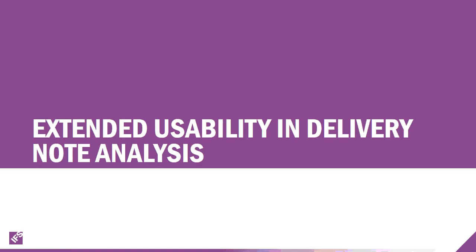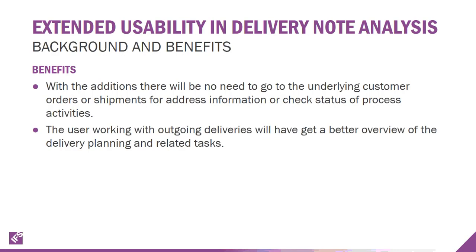We've done some improvements in the delivery node analysis based on business requirements from customer feedback. The requirement was to have an operations center where the user can plan, analyze, and overview deliveries and print documents from there — extending the information visible in the delivery node analysis page and the shipment page with more delivery-related information. This provides the ability to work from a single screen without drilling down to underlying customer orders to look up addresses or other details, giving the user planning shipments a much better tool.